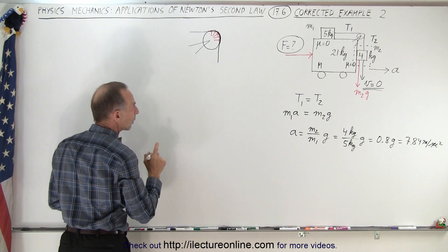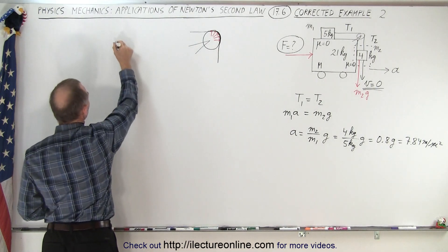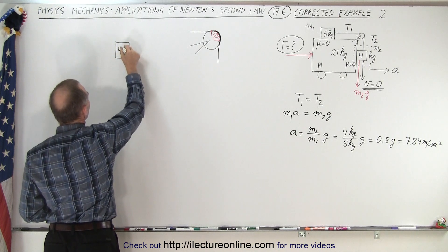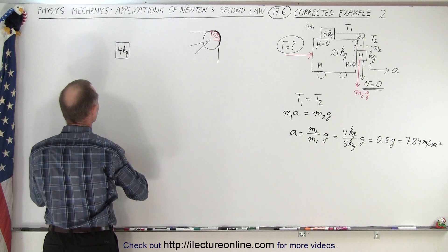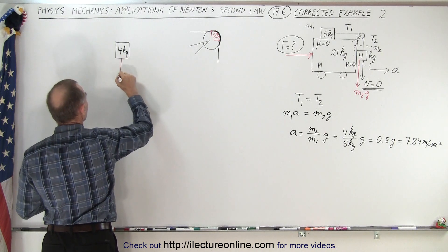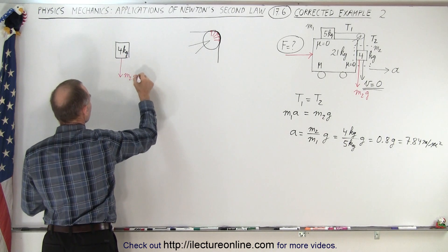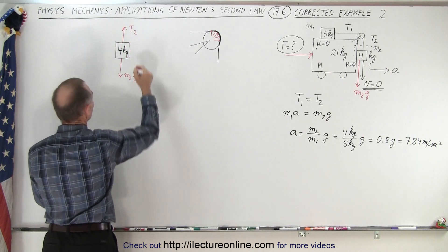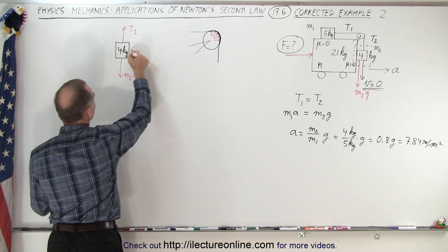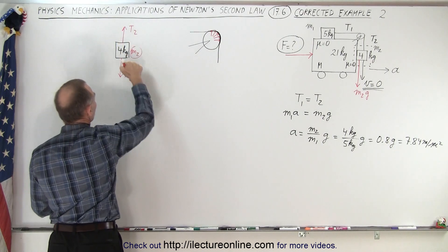Let's see what we can do if we draw a free body diagram. Here we have a 4 kilogram mass, and then we have the force acting downward which is the m2g, and now we have a tension acting upward, we call that tension two.